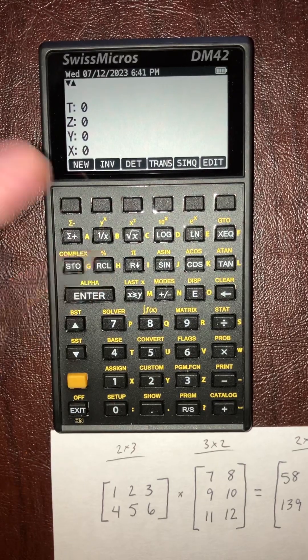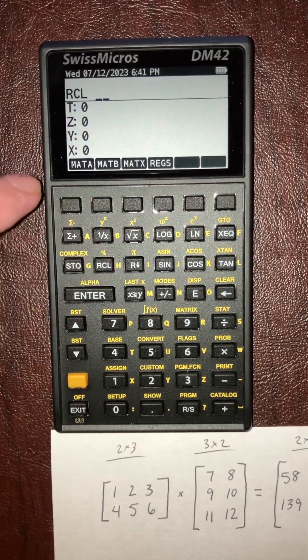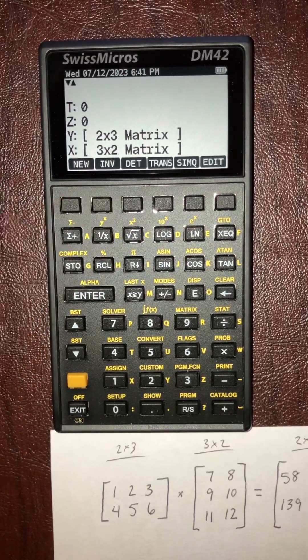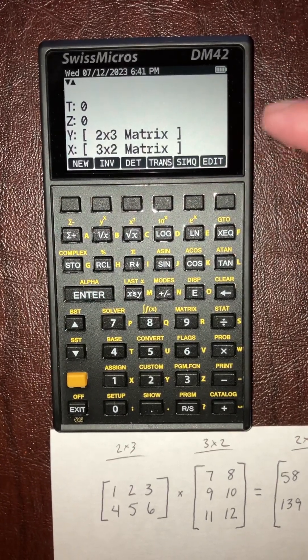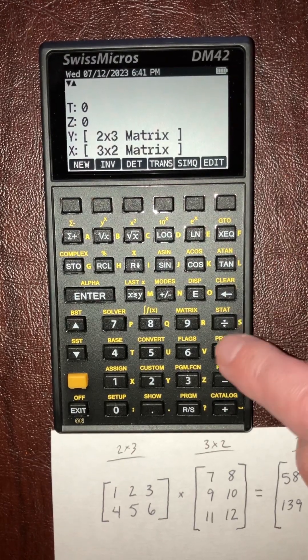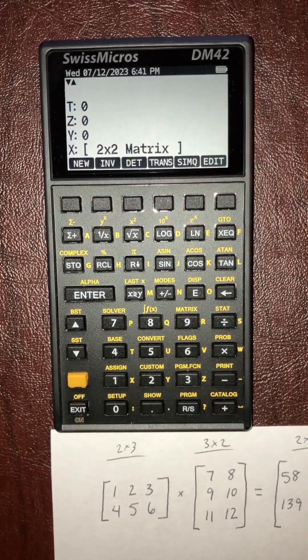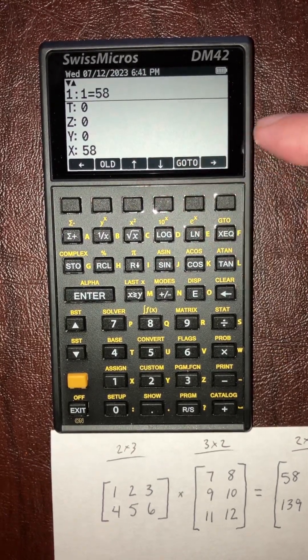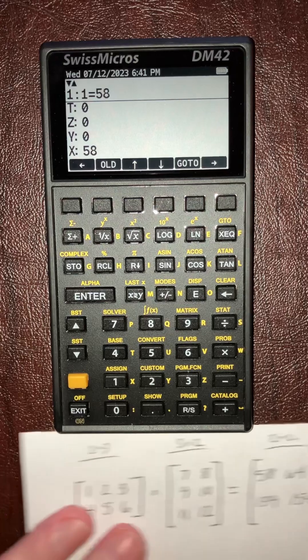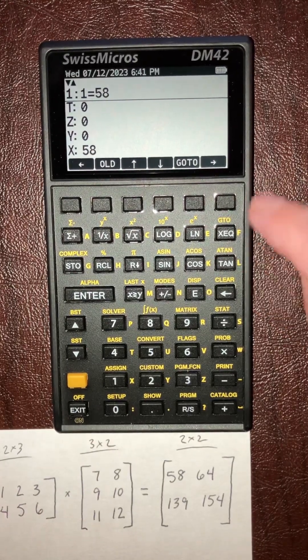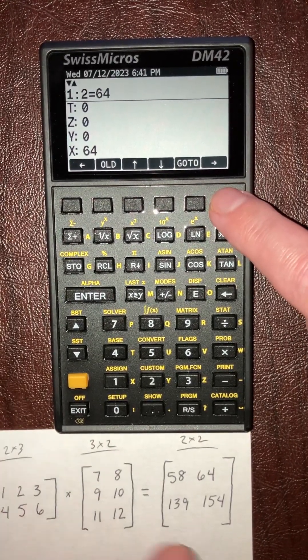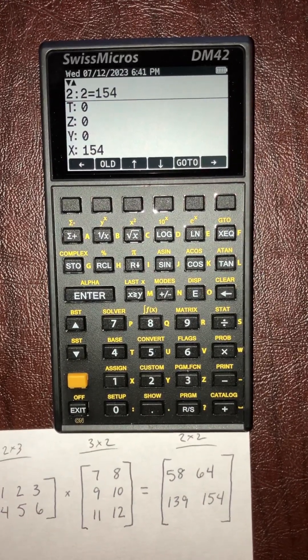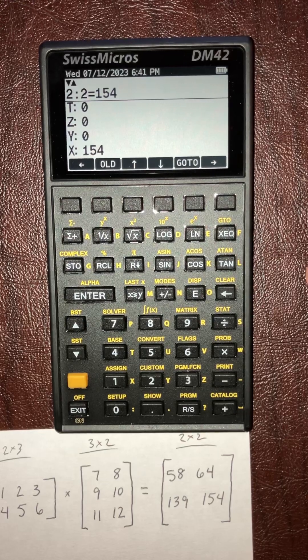Now we stored the matrices in matrix A, recall matrix B, so now I have the two matrices here. So multiplying is just multiply, and you get the result in the matrix. Let's see what this is - edit. You see position one one, that's 58, 64, 139, 154. And that is how you can multiply matrices.